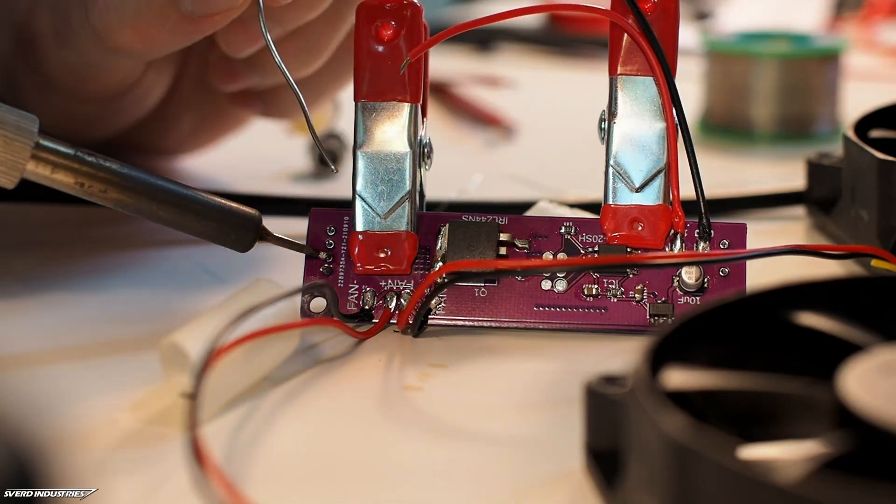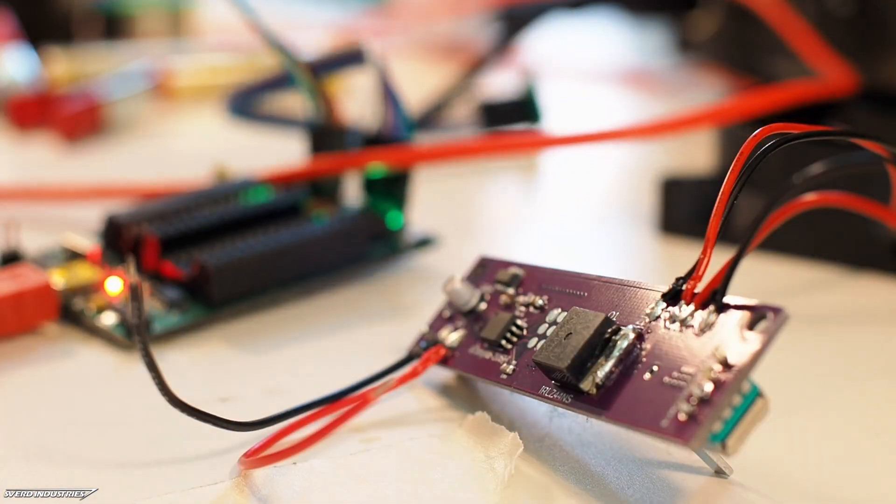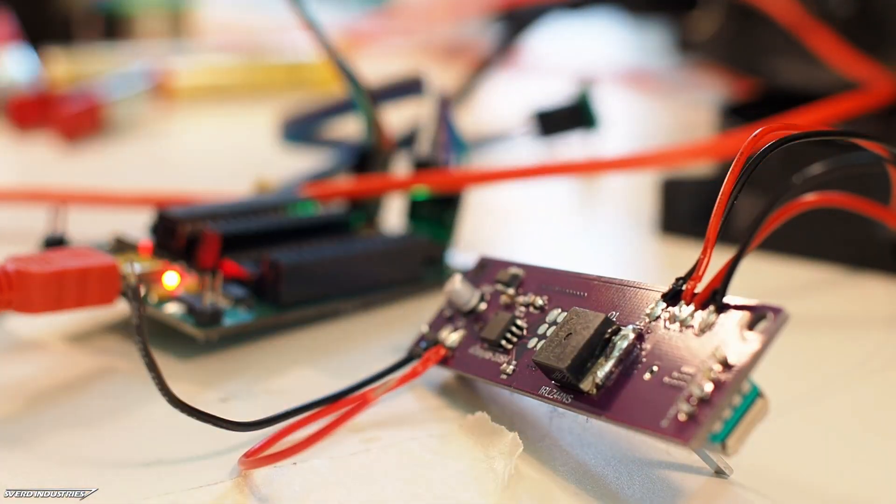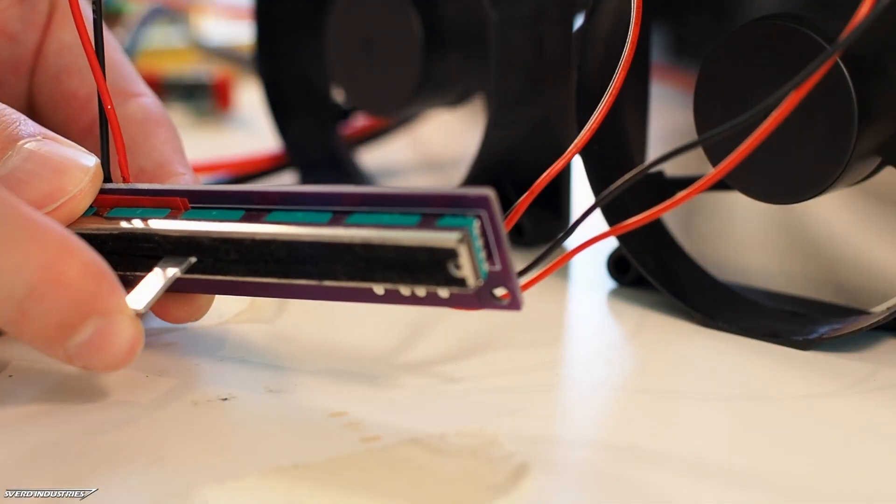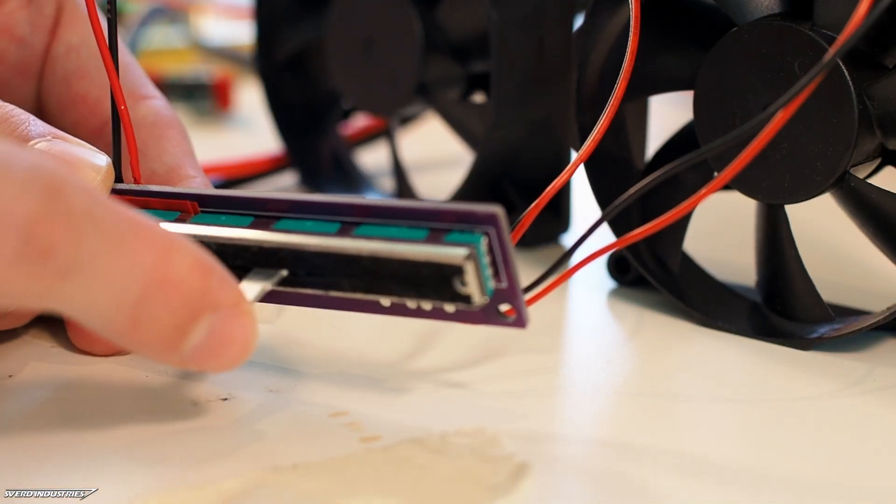I soldered all components on the back side while the PCB could lay flat before soldering the sliding potentiometer. When the circuit board was finished, I uploaded the code and checked that everything still worked and the microcontroller could drive the two fans.